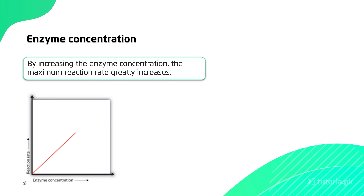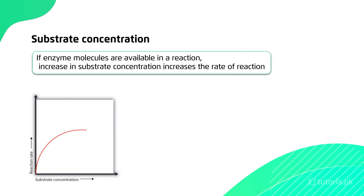Then there is enzyme concentration. Obviously, as you increase the enzyme concentration, your rate of reaction will also increase. Similarly, as you increase the substrate concentration, your rate of enzyme activity will increase — but only up to a certain point. At that point, all the active sites of the enzymes will be filled up, and beyond that the reaction becomes static.